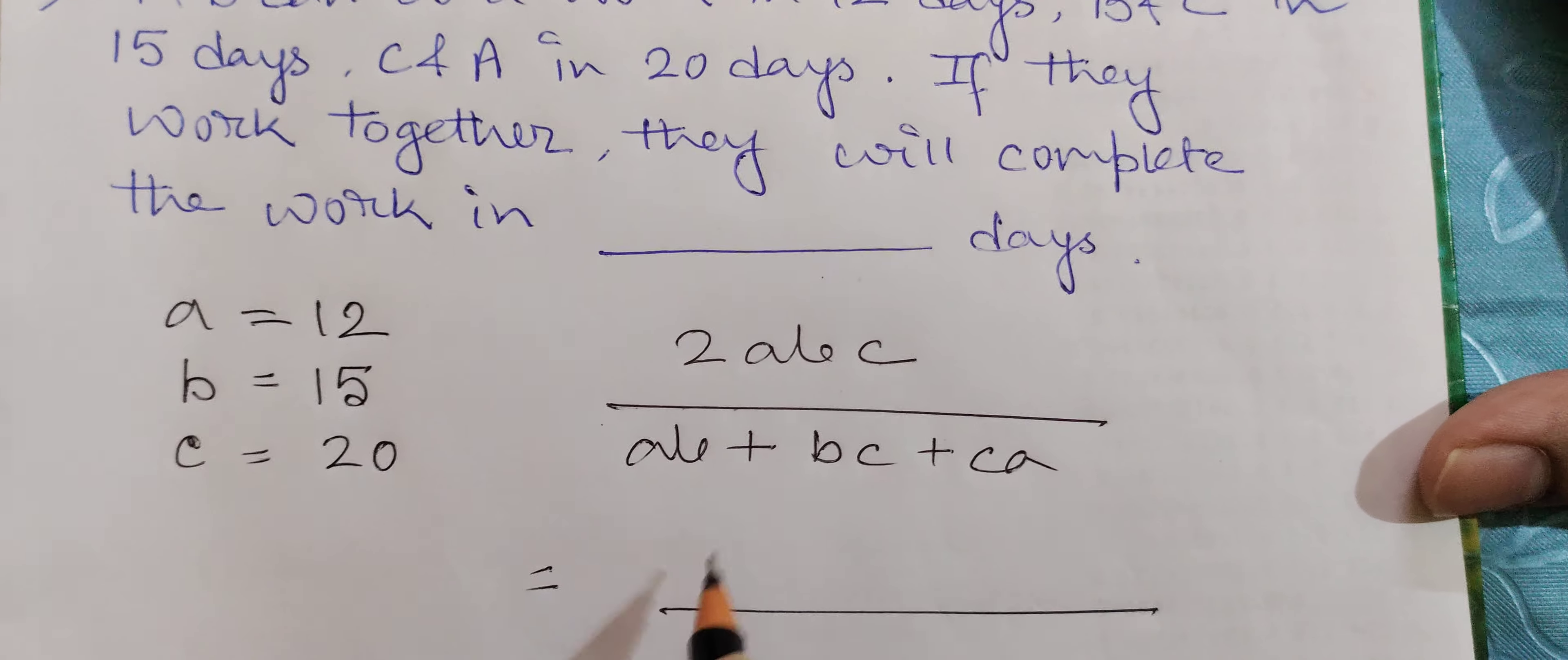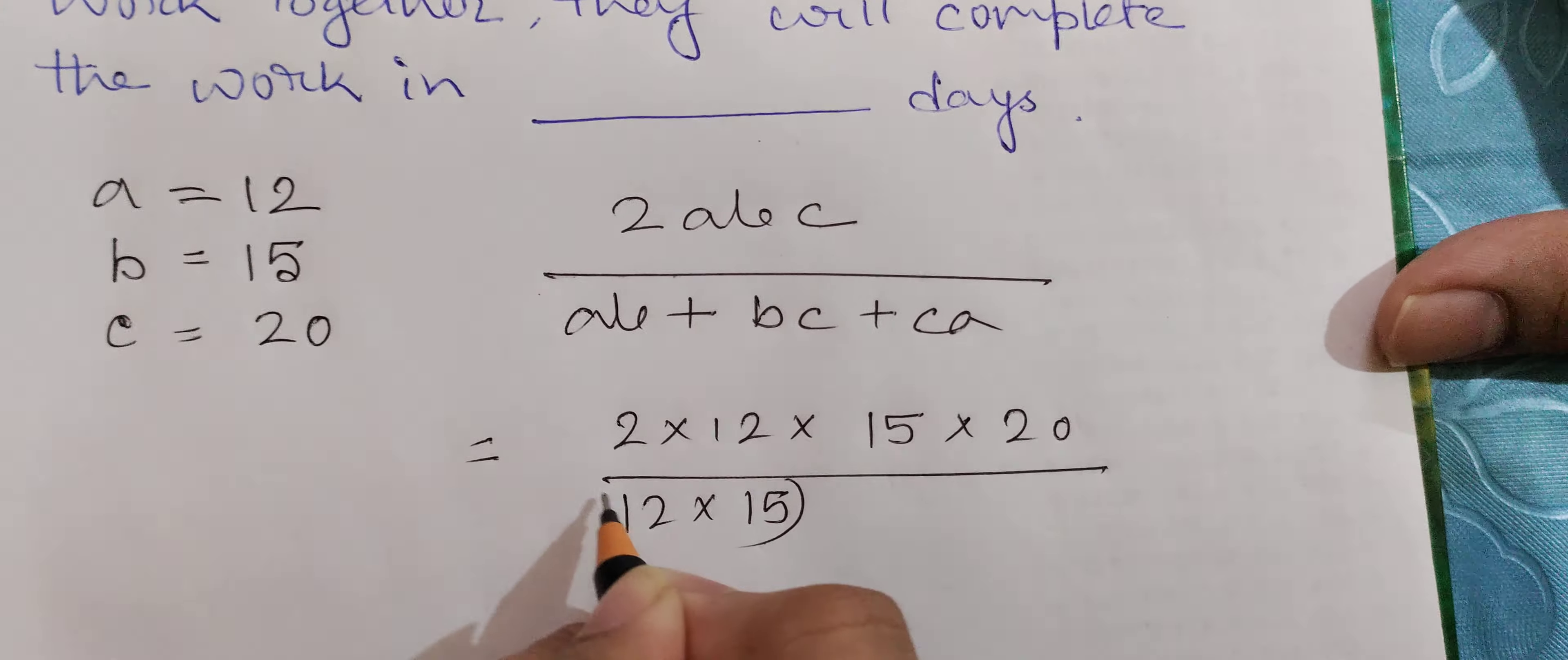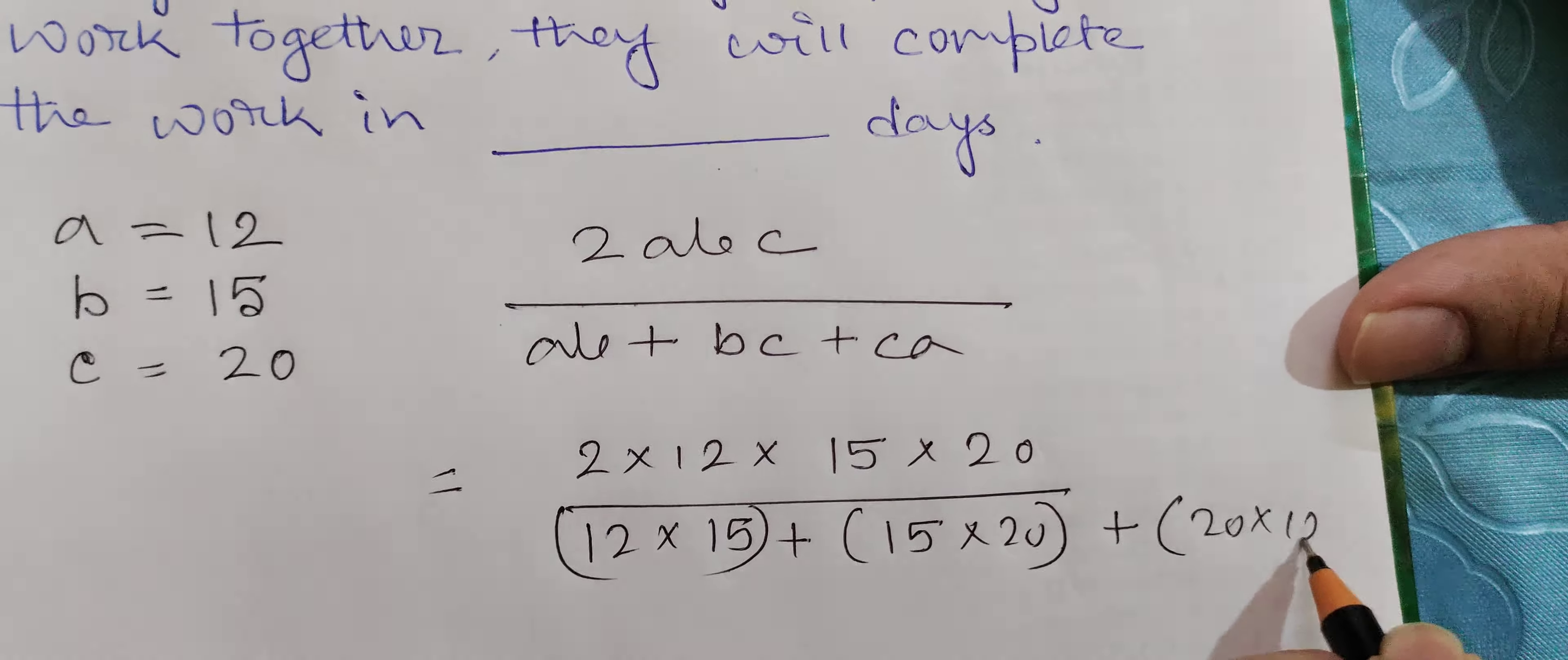In how many days will they complete? As per my formula, 2ABC divided by (AB plus BC plus CA). Now I will use these values: 2 times 12 times 15 times 20, divided by (12 times 15 plus 15 times 20 plus 20 times 12).